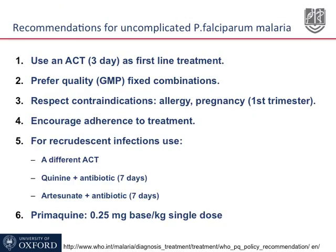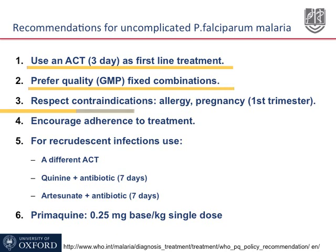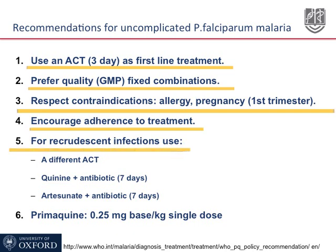This slide summarizes the recommendations for the treatment of uncomplicated P. falciparum malaria: use an ACT, preferably quality-assured, respecting contraindications and encouraging adherence. For recrudescent infections, the choice is between using a different ACT, or a combination of quinine with an antibiotic for seven days, or artesunate plus an antibiotic for seven days. A single low dose of primaquine is added to eliminate the remaining gametocytes.